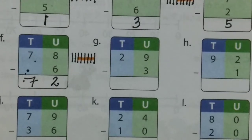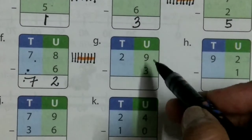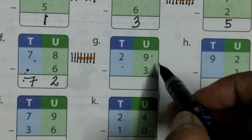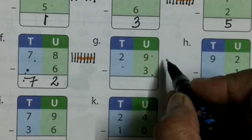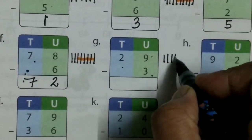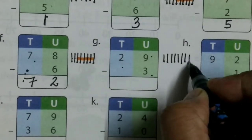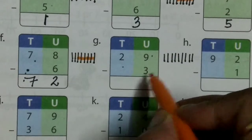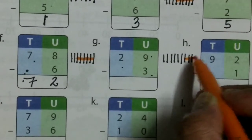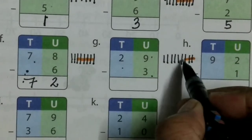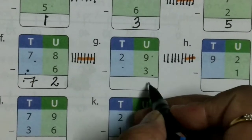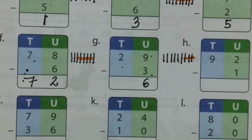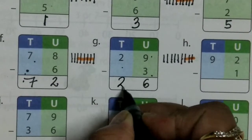Come to question number G. Firstly we subtract the unit column, then we move to the tens. In the unit column we have 9, so draw 9 lines: 1, 2, 3, 4, 5, 6, 7, 8, 9. From 9, take away 3 — cut 3 lines. Count the remaining: 1, 2, 3, 4, 5, 6. So 9 minus 3 equals 6. And in the tens column we have only 2, so it will be 2.